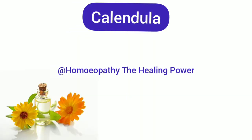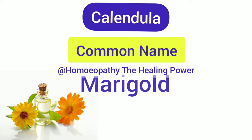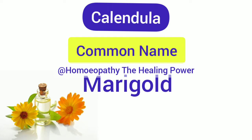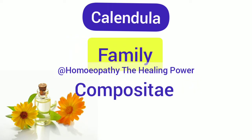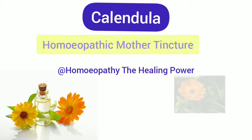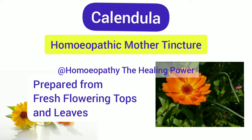Calendula officinalis is an Indian plant found all over India. Its common name is marigold and it belongs to the family Compositae. The homeopathic mother tincture is prepared from the fresh flowering tops and leaves of this plant.